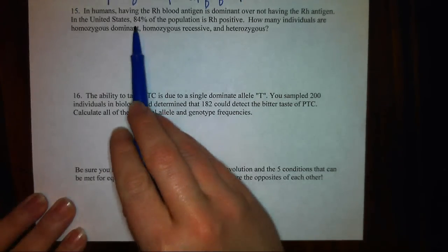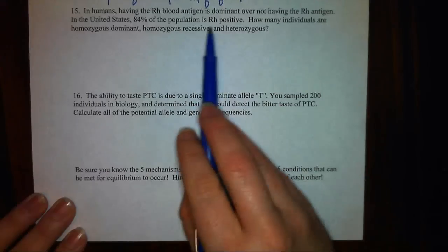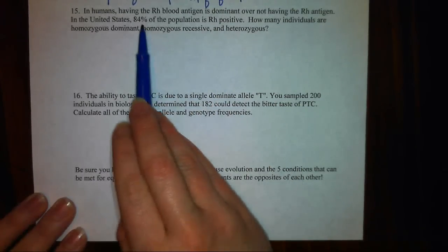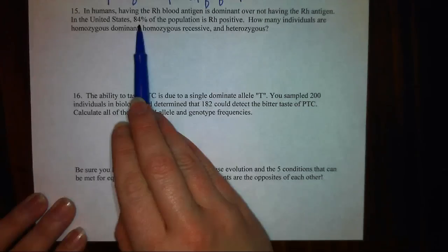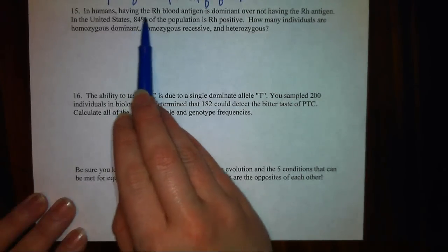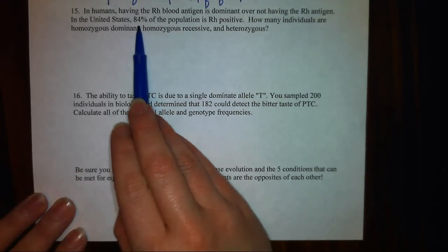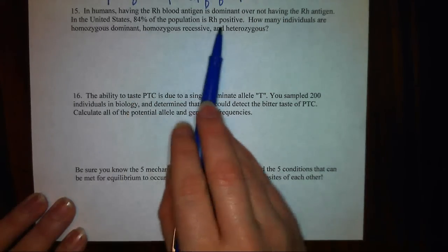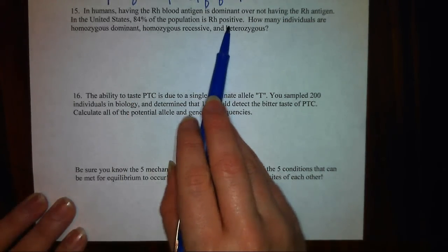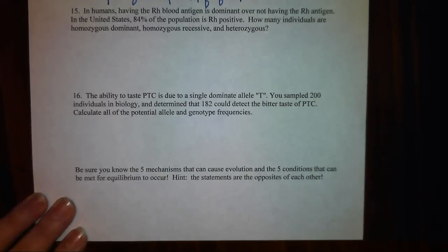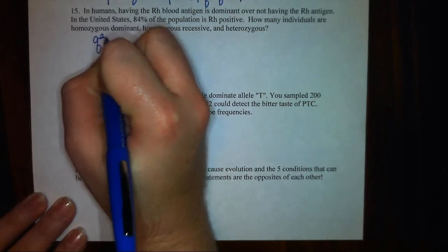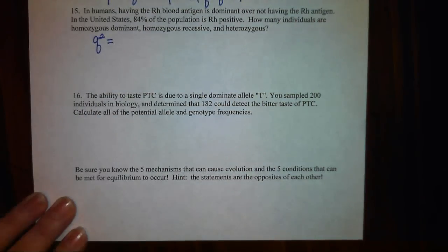It tells me that 84% of the population is Rh positive. Now, out of this 84%, I don't know what part of that is homozygous dominant versus heterozygous. So really, I can't start with this number. I need to think to myself, if 84% is showing the dominant trait, then what percentage is showing the recessive trait?